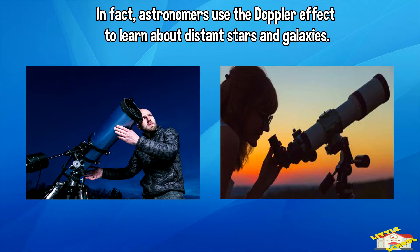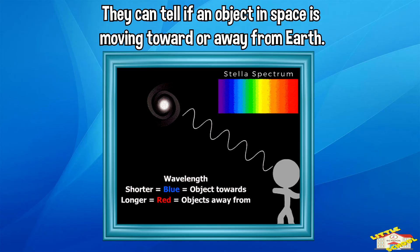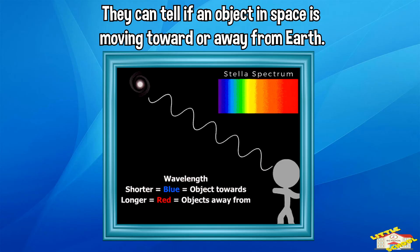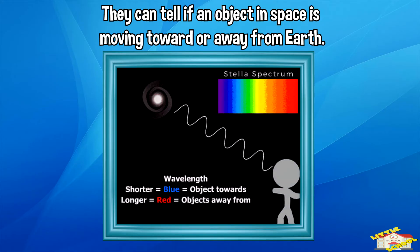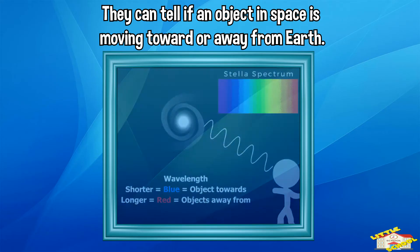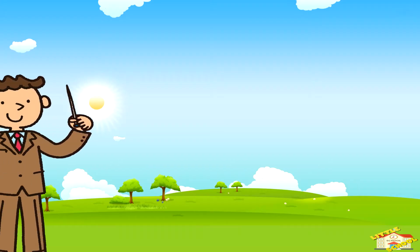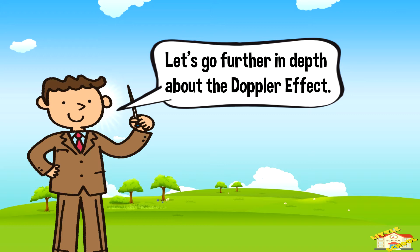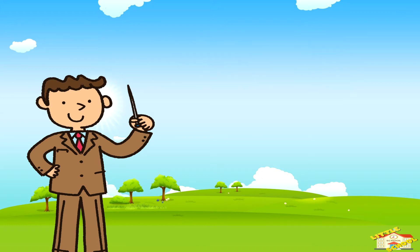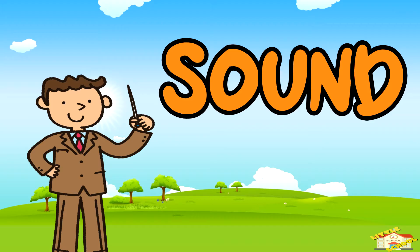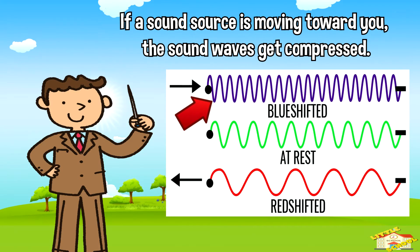They can tell if an object in space is moving towards or away from Earth by looking at the change in the color of its light. Let's go further in depth about the Doppler effect and sound.